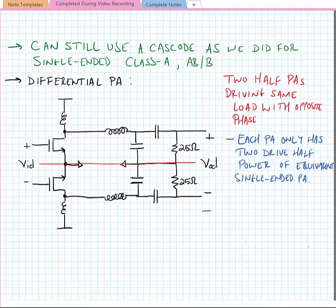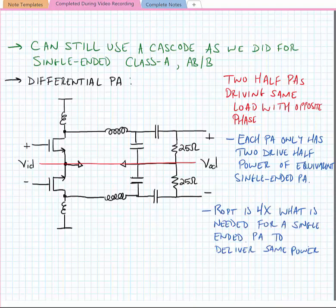So the two half PAs being driven by the same load with opposite phase means that the effective voltage swing is twice what it otherwise would have been, and only having to deliver half of the power of an equivalent single-ended PA means that the optimum termination resistance for this power amplifier is four times what's needed for a single-ended amplifier to deliver the same power. Alternatively, we could deliver higher power by making our ROPT smaller.